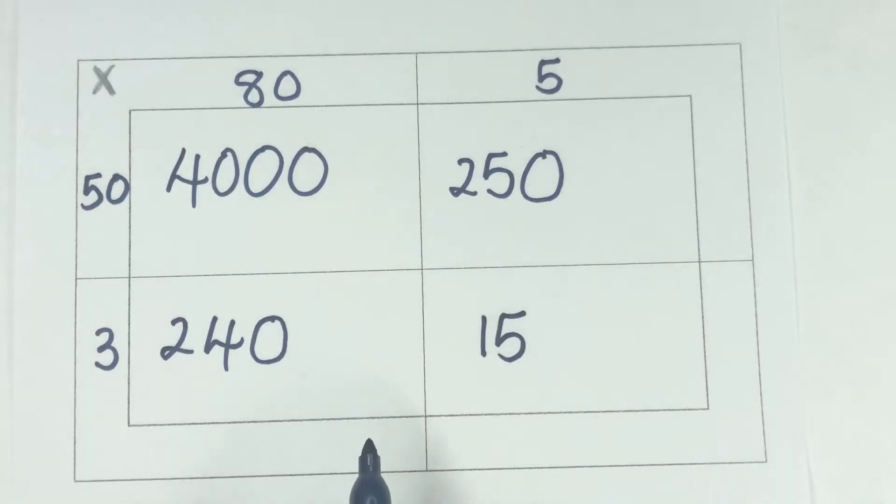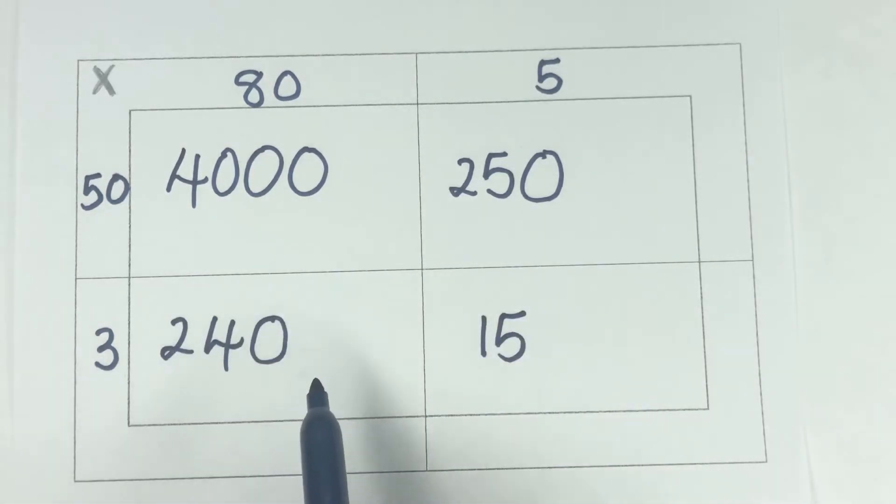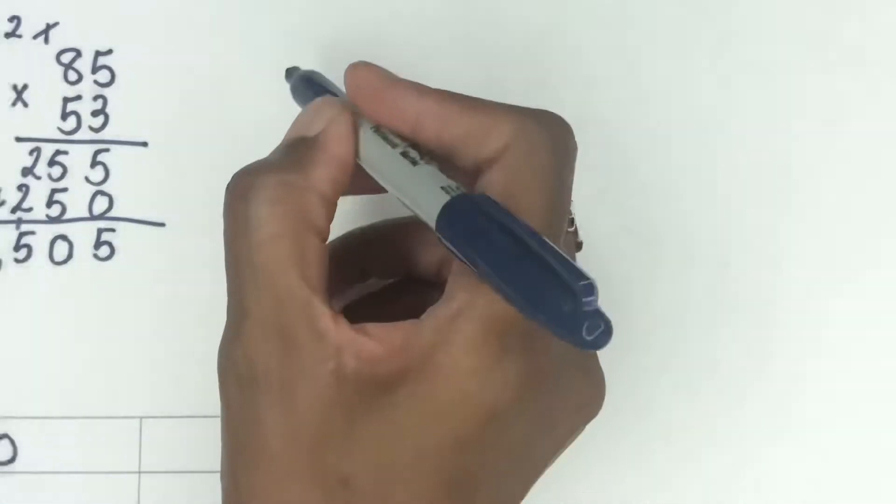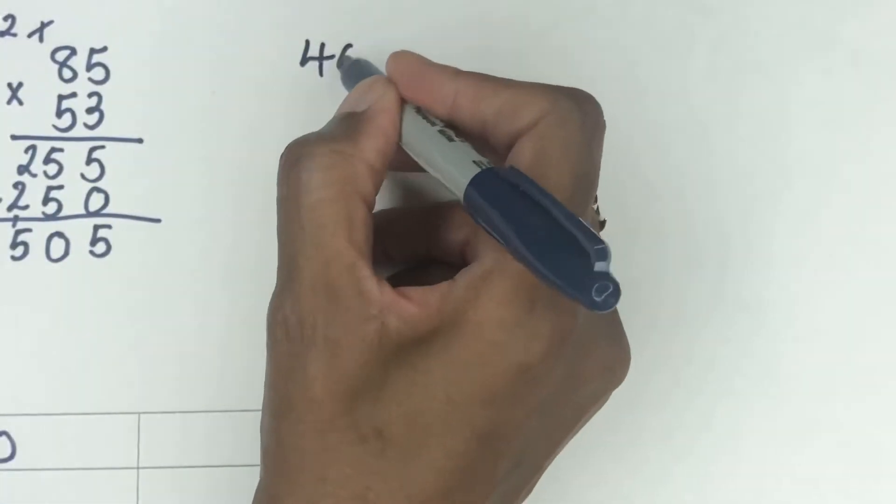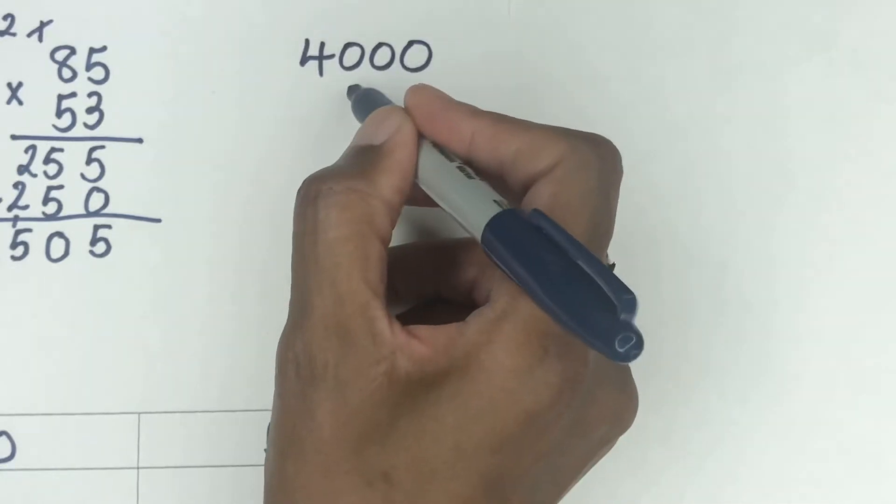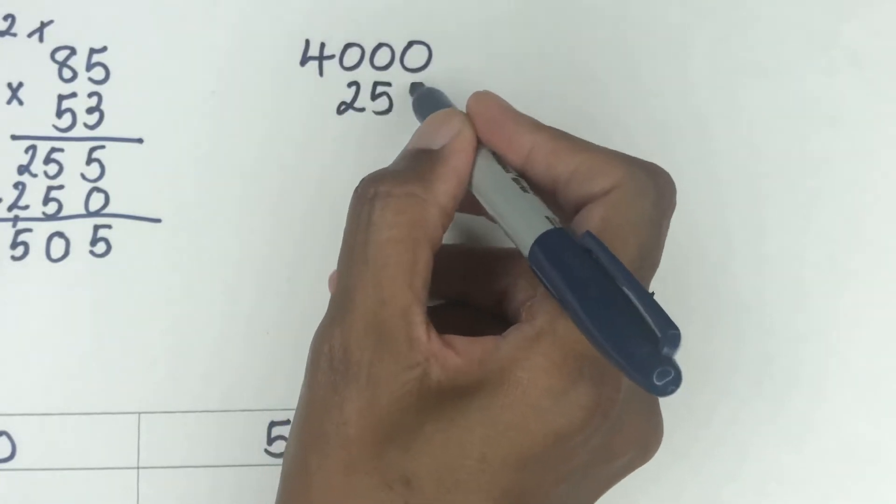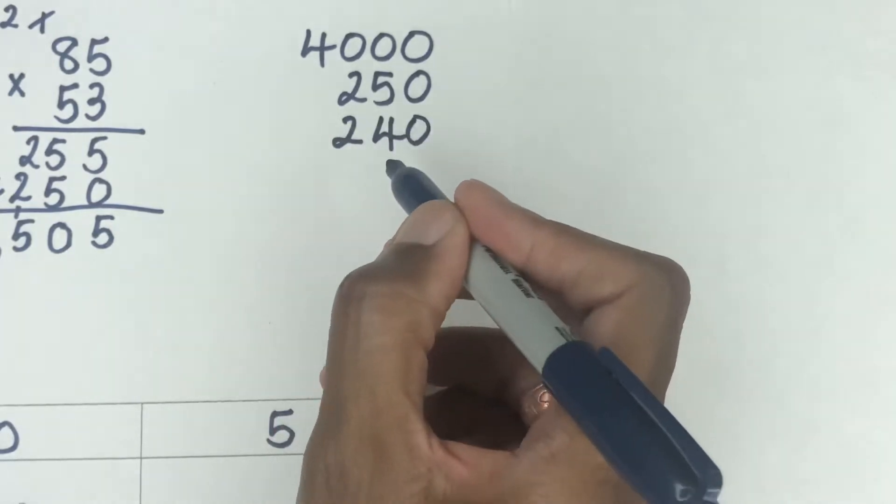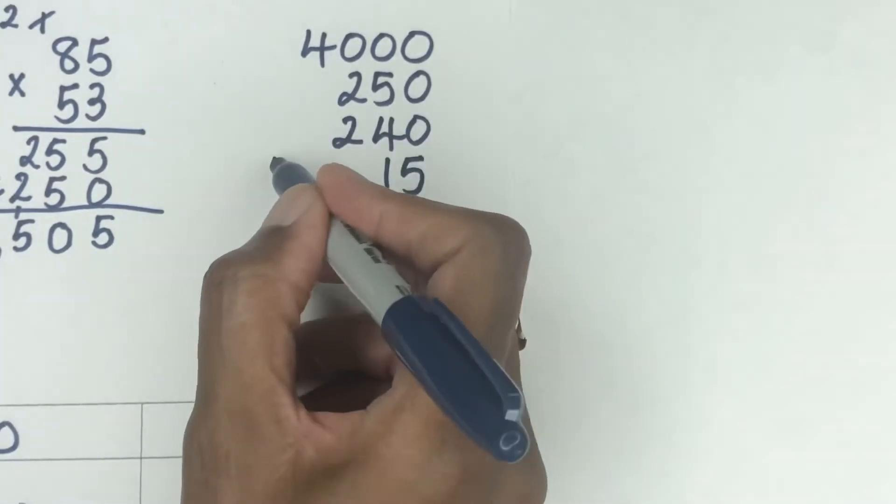Now the next step to do is to add all these up, right? So I'm going to come over here and then I'm going to add all these numbers together. So you got the 4,000 that was in the top box. Second box across, it had 250. The third box down, it had 240. And then the last box, it had 15, right?